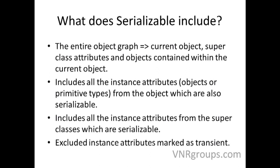That is what the entire object graph means. Serializable will include all the instance attributes — those could be primitive types or objects of other classes, but those objects should also be serializable. It will also serialize all instance attributes from the super classes. The only instance attributes excluded from being serialized are those marked as transient. If you mark any attribute as transient, it will not get serialized.